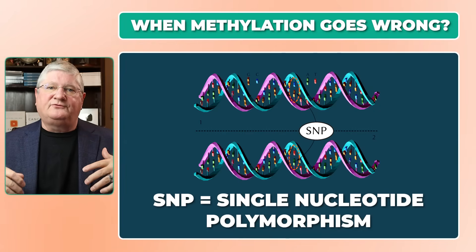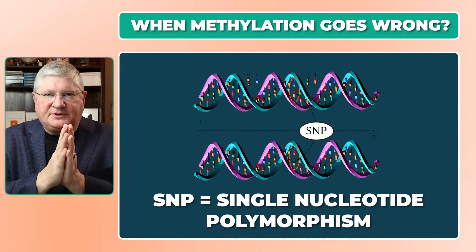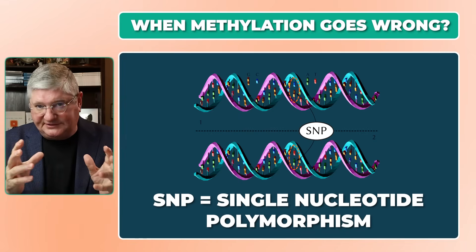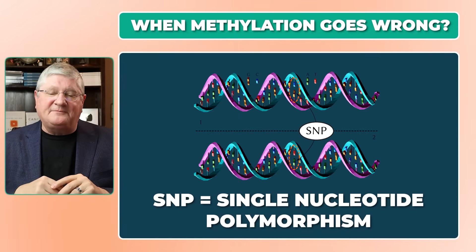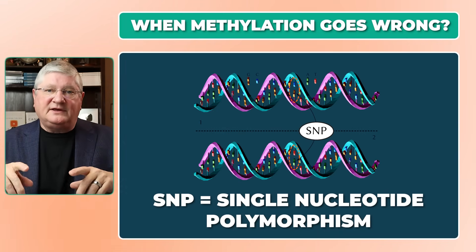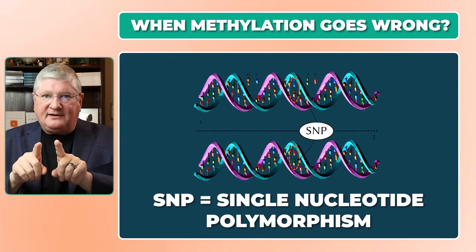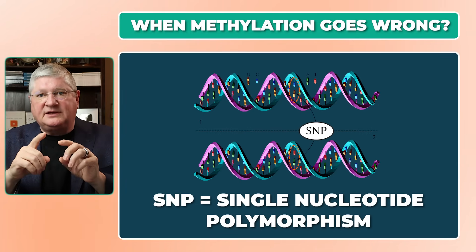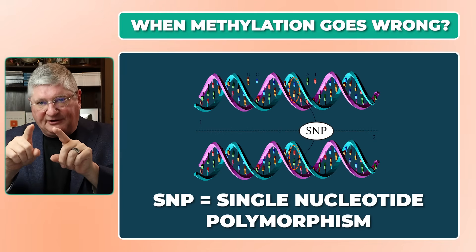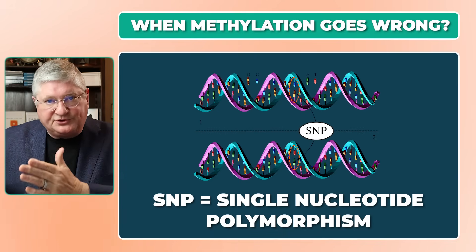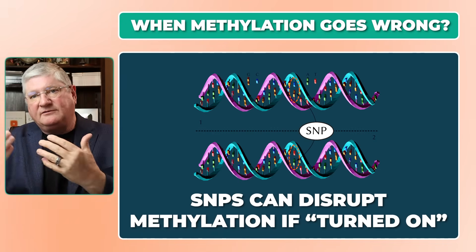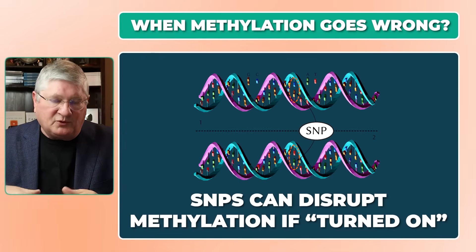How could this natural process of creating methyl donors and donating them elsewhere go off the rails? You could have part of your genomic structure that has something called a single nucleotide polymorphism, or SNP. You can have these — they come in pairs. If you have a polymorphism, it means that part of the pair or both parts of the pair are not in the same position as a normal gene would have, so you're going to have a defective code for this enzyme or this process.